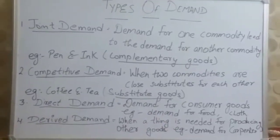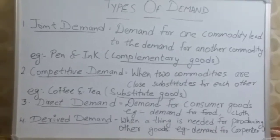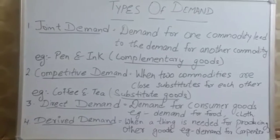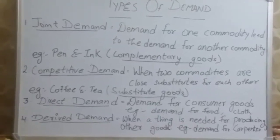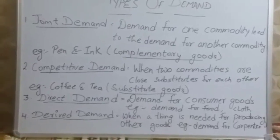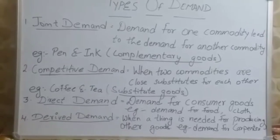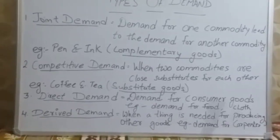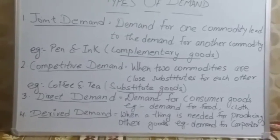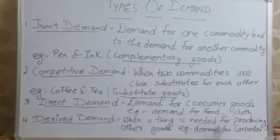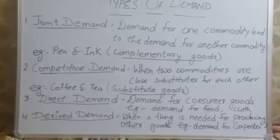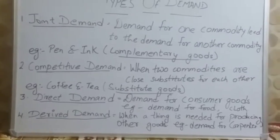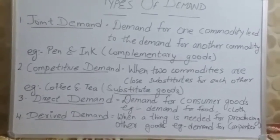The third type is direct demand — demand for consumer goods which we demand to directly satisfy our wants, such as food and clothes. When we eat food, our desires are satisfied, so we call it direct demand. The fourth type is derived demand — when a thing is needed for producing other goods. For example, demand for a carpenter: we only demand a carpenter when we need a table. Before that, we do not demand the carpenter. That type of demand is called derived demand.